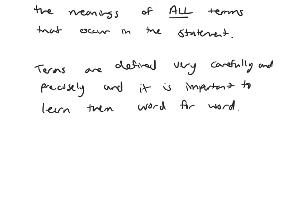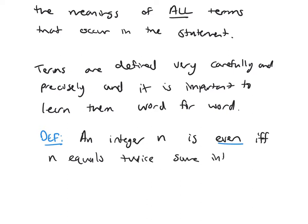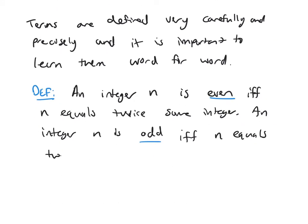So we're going to start with our first set of definitions. We're going to define what it means for an integer to be even and what it means for an integer to be odd. So an integer n is even if and only if n equals twice some integer. And an integer is odd if and only if n equals twice some integer plus one.